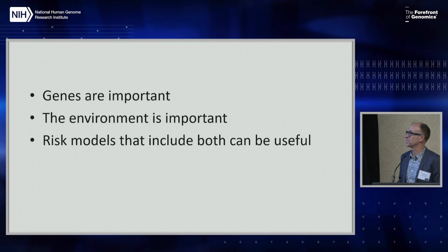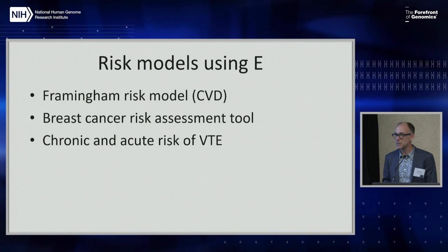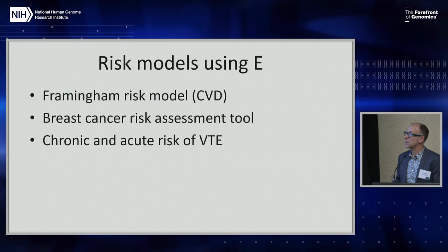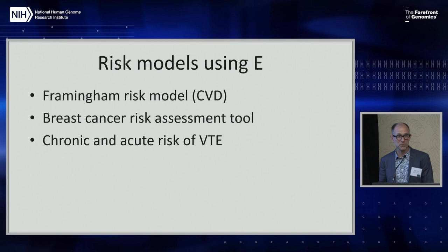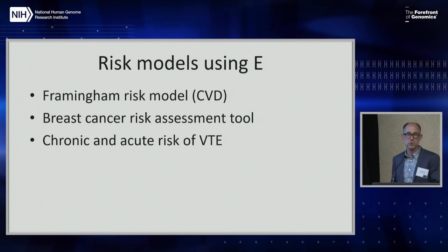We've already seen examples of models that include environmental risk factors — and here I'm thinking environmental very broadly, including demographics, clinical factors, and biomarkers. So Framingham for CVD, breast cancer risk assessment tool or the Gale model for breast cancer. We've had examples of chronic predictors of VTE over the next couple of years versus short-term risk right after hospitalization. These are all scenarios where we have existing risk models used in the clinic.